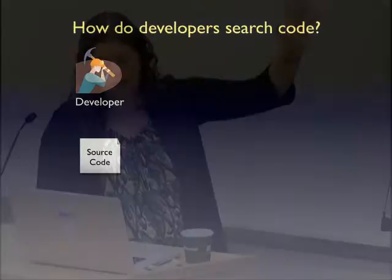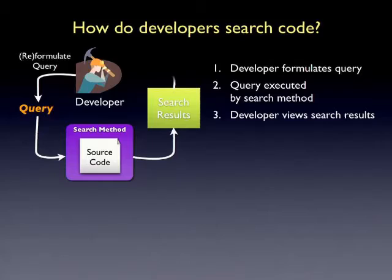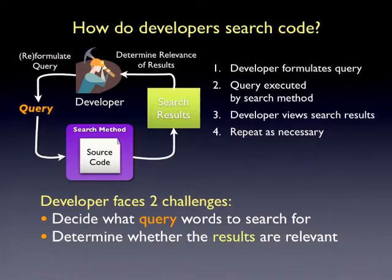With query reformulation, we're concerned with helping the developer pick the right query words to maximize search results and determine if the results are relevant. Developers typically start with a query, get results, and repeat until they find what they're looking for or give up. The developer faces two key challenges: deciding what query words to search for, and determining whether results are relevant.